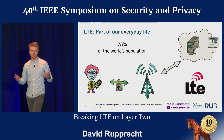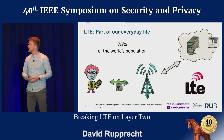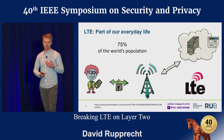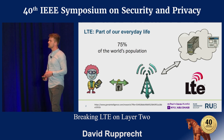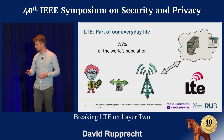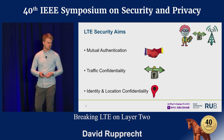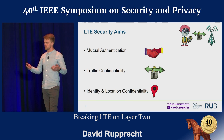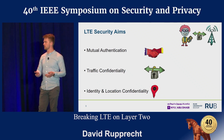This talk is about LTE, which we use on a daily basis. It's expected that 75% of the world population are using LTE in 2020 for various scenarios — chatting with friends or phoning our parents. So we need to secure the communication, in particular the radio communication between your phone and the network. LTE has standard security aims like mutual authentication, traffic confidentiality, and special aims like identity and location confidentiality.